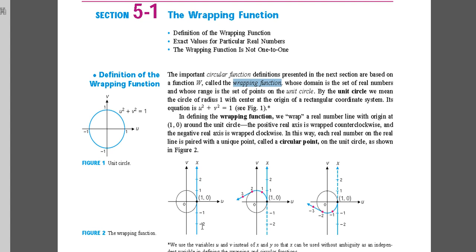In defining the wrapping function, we wrap a real number line with origin at the point (1, 0) around the unit circle. The positive real axis is wrapped counterclockwise and the negative real axis is wrapped clockwise. This way, each real number on the real line is paired with a unique point called a circular point on the unit circle.